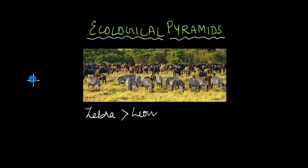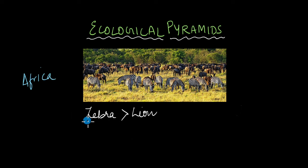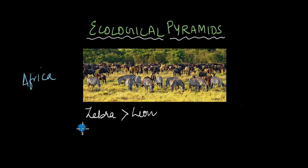When I used to watch nature documentaries about animals that live in Africa, this is something I've always observed. There are more zebras, gazelles, deer, and elephants compared to the number of lions or cheetahs in that ecosystem, which means that there are more prey compared to the number of predators.